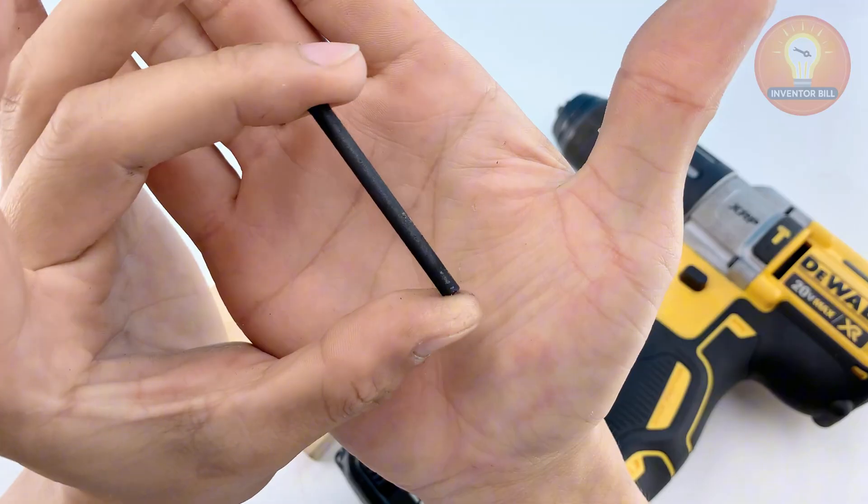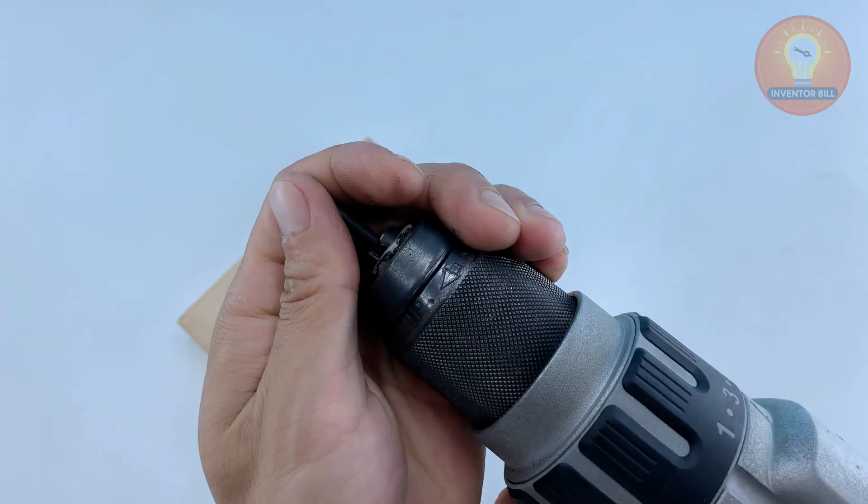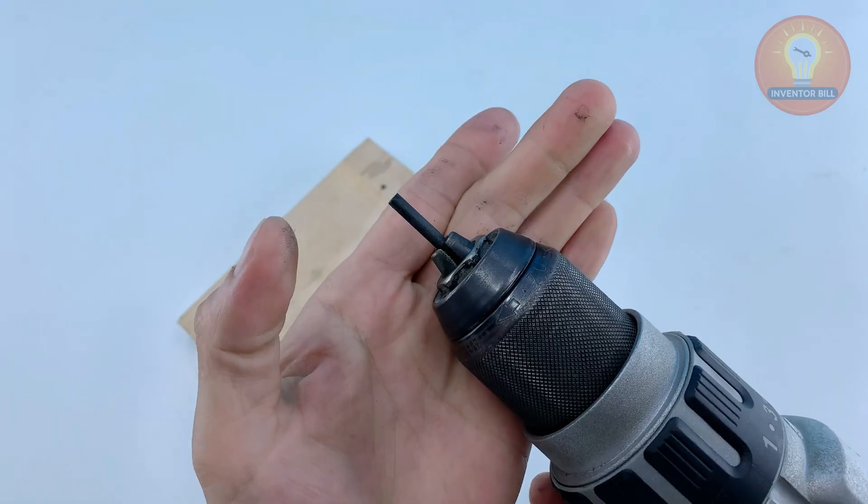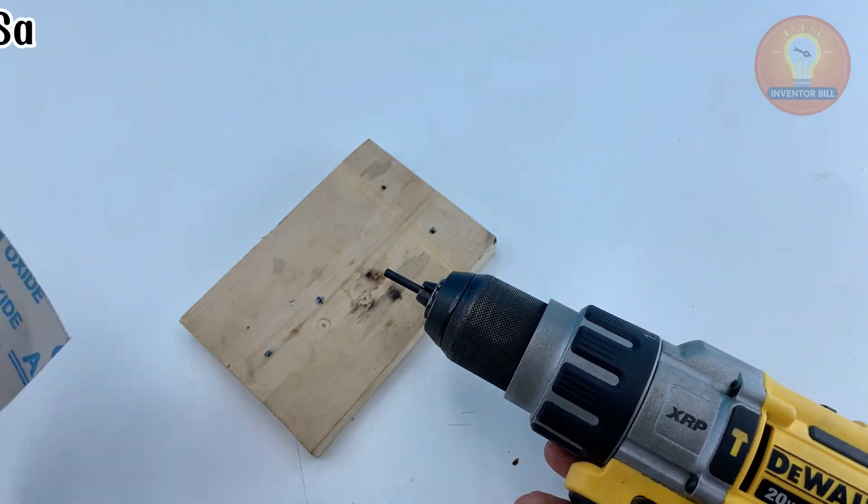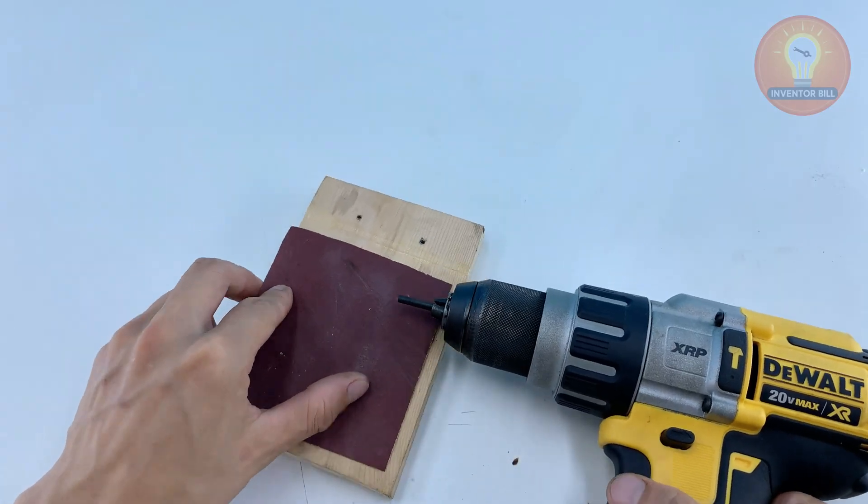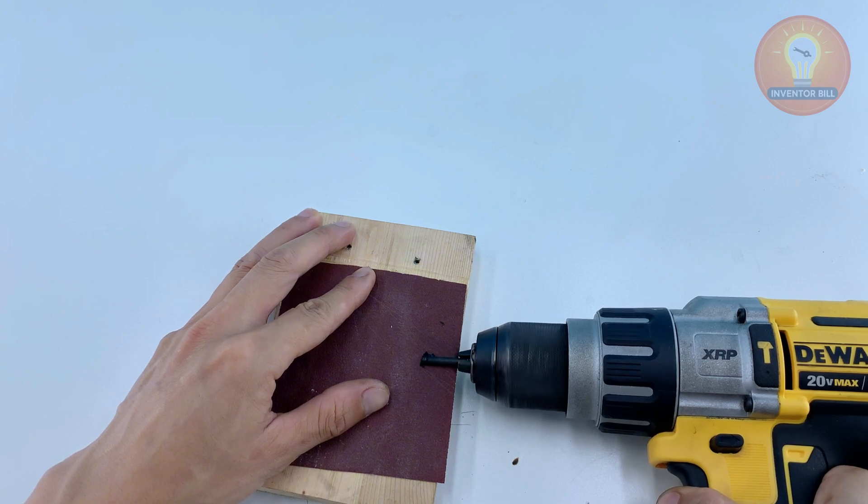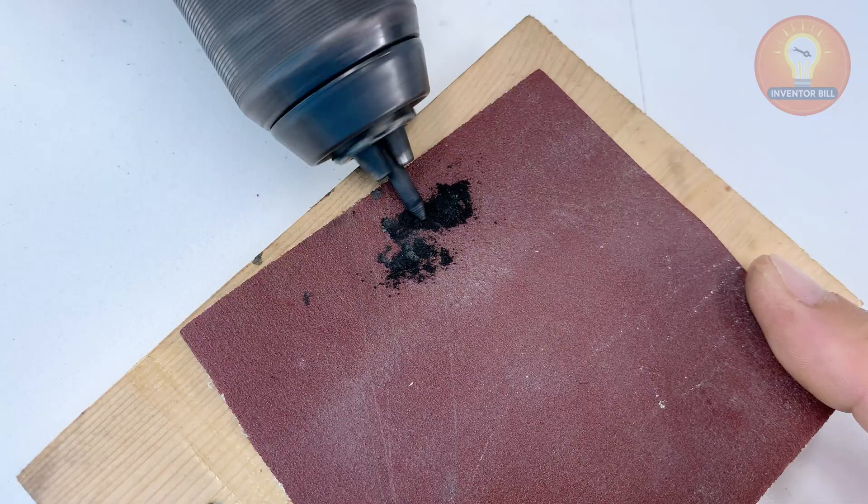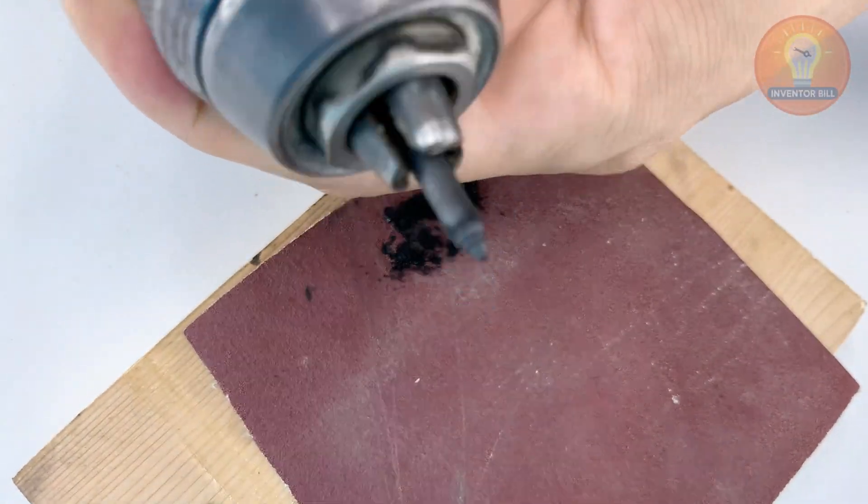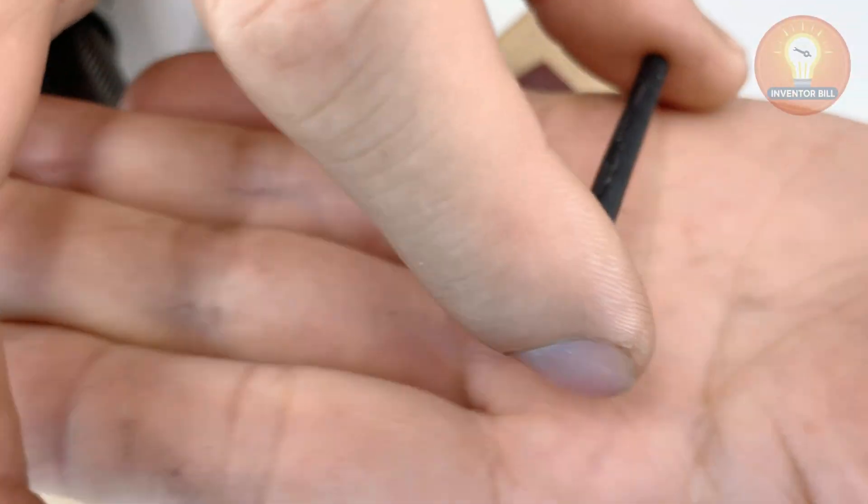Once you've removed the graphite core from the AA battery, slip it into the chuck of your drill and tighten it gently. Now run the drill at a slow speed and press the tip against a piece of fine sandpaper. Let the motion do the work until the graphite forms a sharp clean point. This gives you a sturdy heating tip that's perfect for controlled soldering.